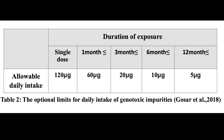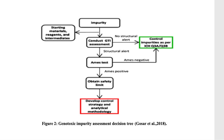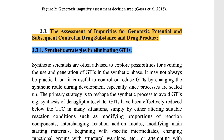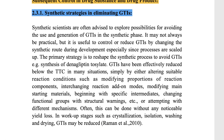The second element is the risk assessment of impurities, focusing on the chemical structure. Knowledge of the chemical structure of an impurity and its formation mechanism is very important to assess its toxicological implication, thus improving the synthetic chemical process to reduce or eliminate the impurity. The figure explains how the assessment is done.